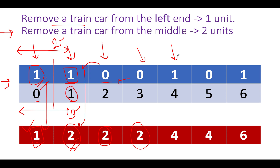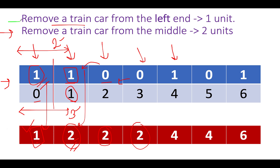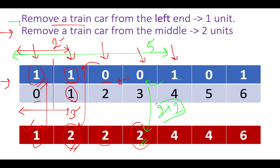Next we see an illegal element (1). The first option: remove all from the left end, costing i+1 = 5. The other option: middle removal — check the previous value, which is 2, and add 2 more = 4. We choose the minimum of 5 and 4, which is 4.